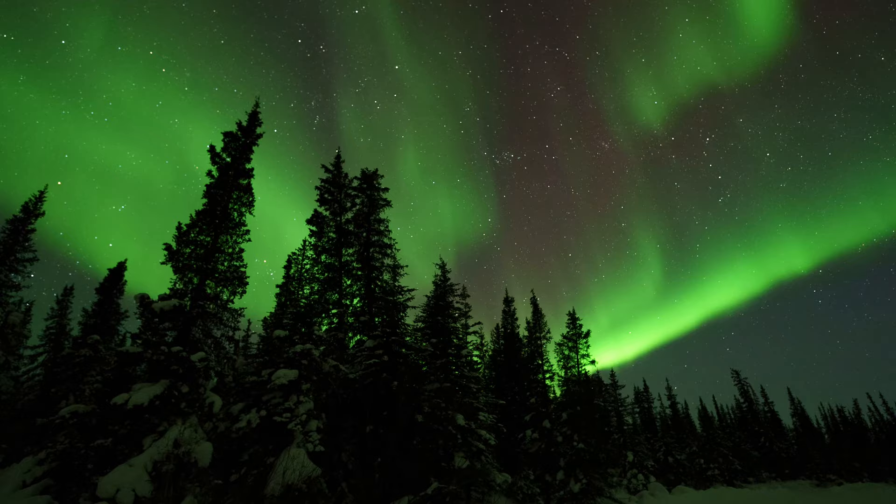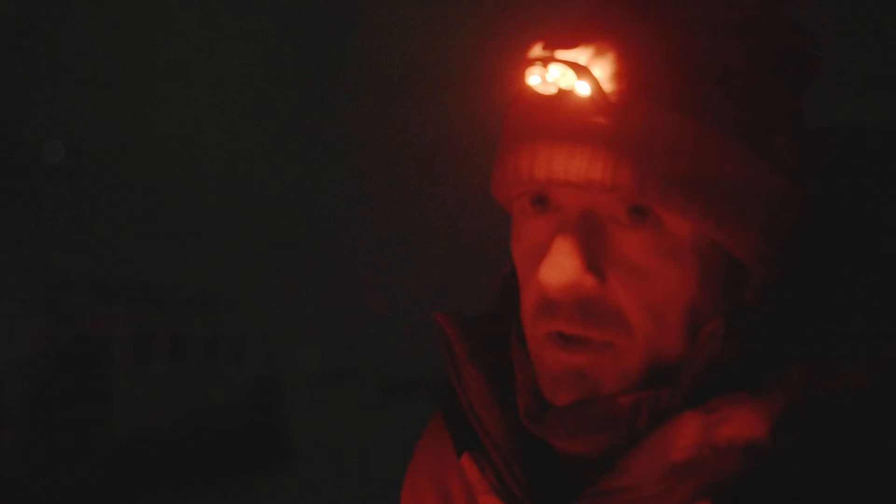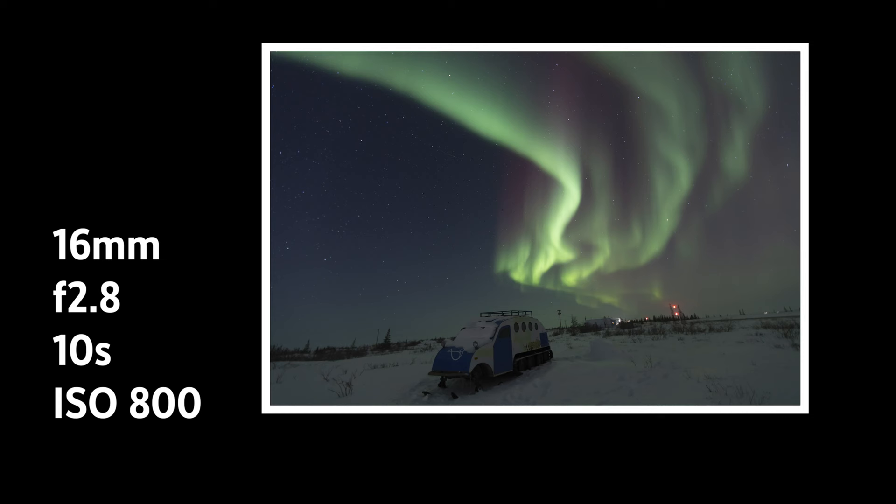We've got this snow coach Bombardier machine in front of us — kind of an old-timey relic of exploration and transportation in the Arctic — with Northern Lights above us in this tundra snowscape environment. We're going to use a little flashlight to paint light on the snow coach to bring a little more light into the scene and illuminate it, because it's a cool piece. We want to see some of the color and texture, but we don't want the whole scene overly bright — we want that nightscape effect to remain true. So we're exposing for the stars and the aurora, but bringing some light into the foreground. The amount of time you have the shutter open will dictate how long and how much you paint the foreground element.